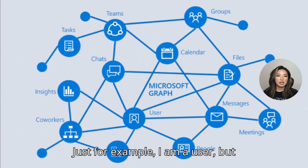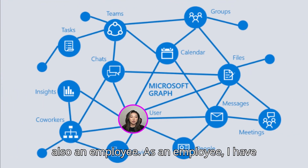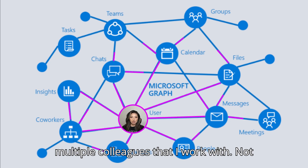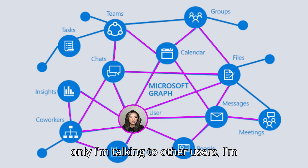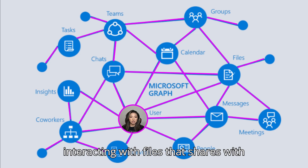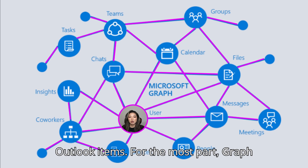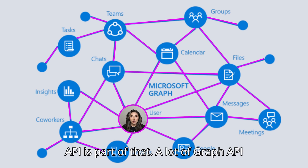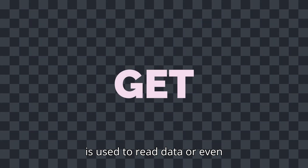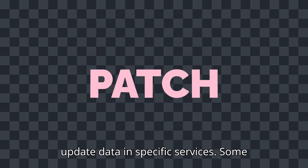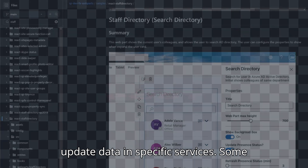For example, I am a user, but also an employee. As an employee, I have multiple colleagues I work with. Not only am I talking to other users, I'm interacting with files shared via Teams, SharePoint, or Outlook items. Graph API is part of that — it's used to read or even update data in specific services.